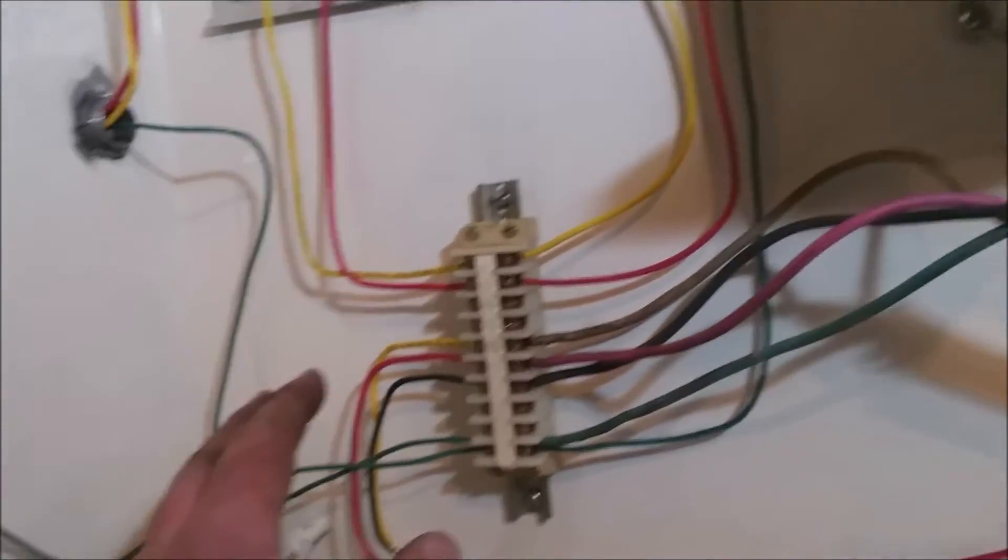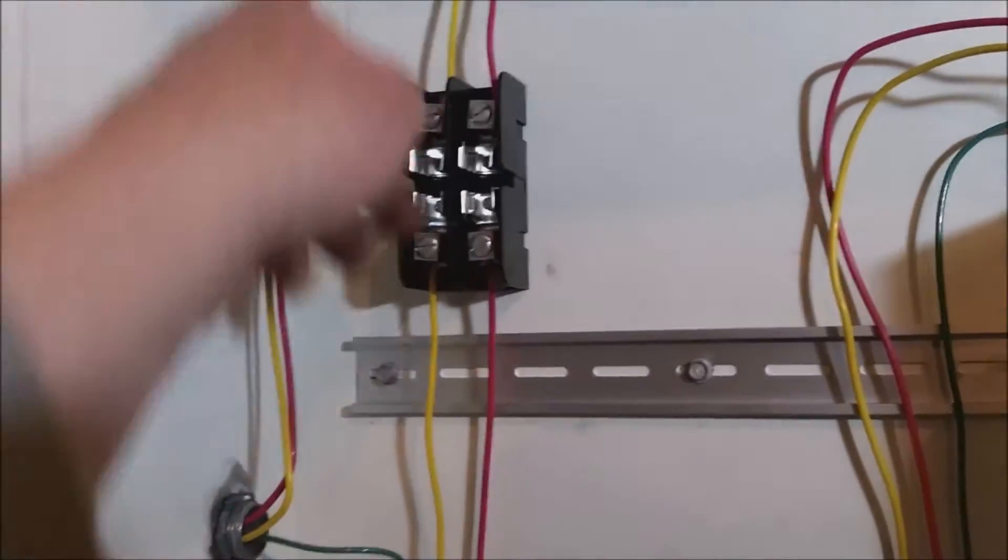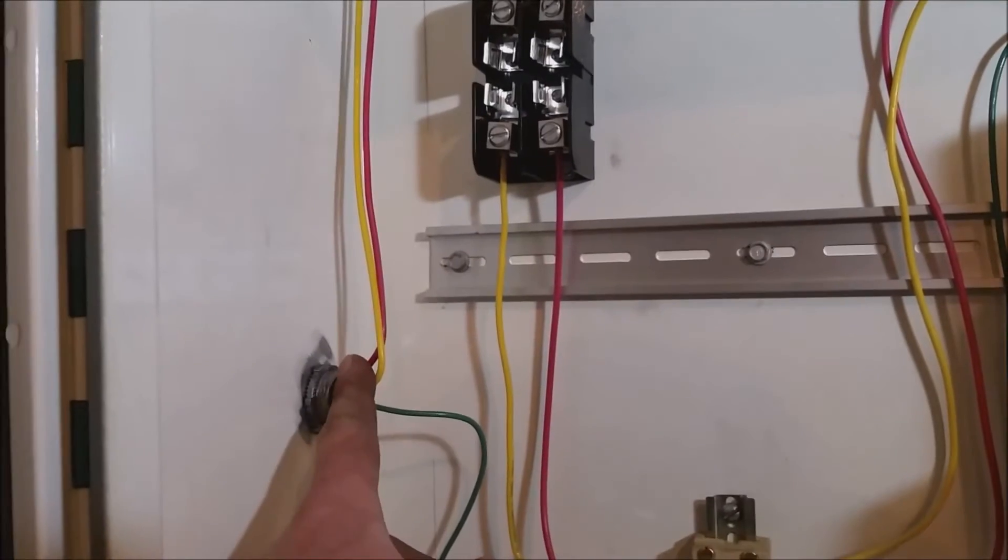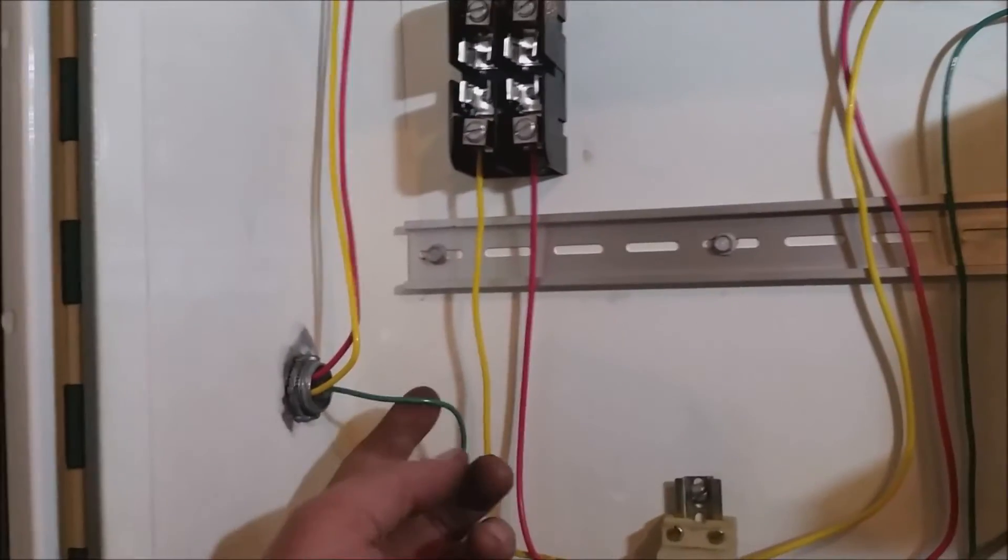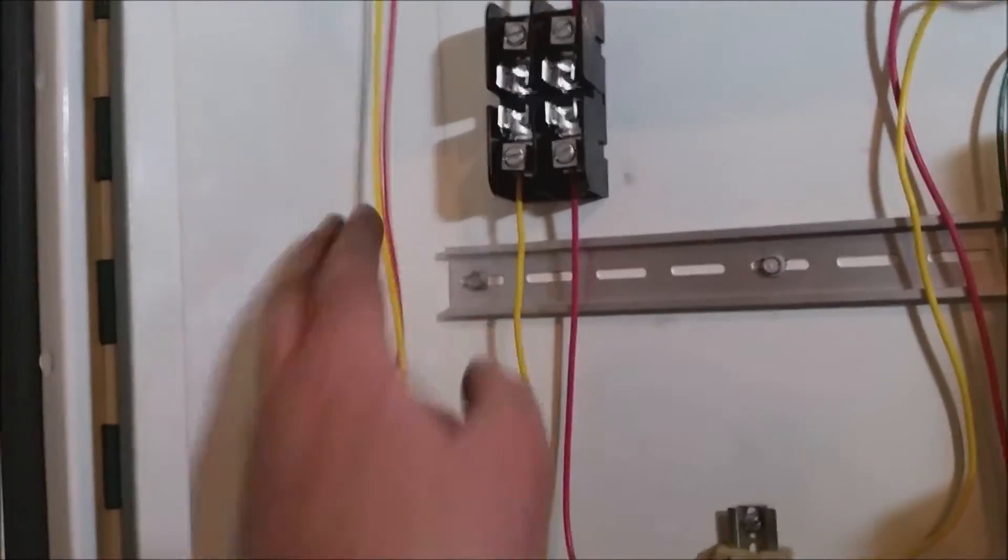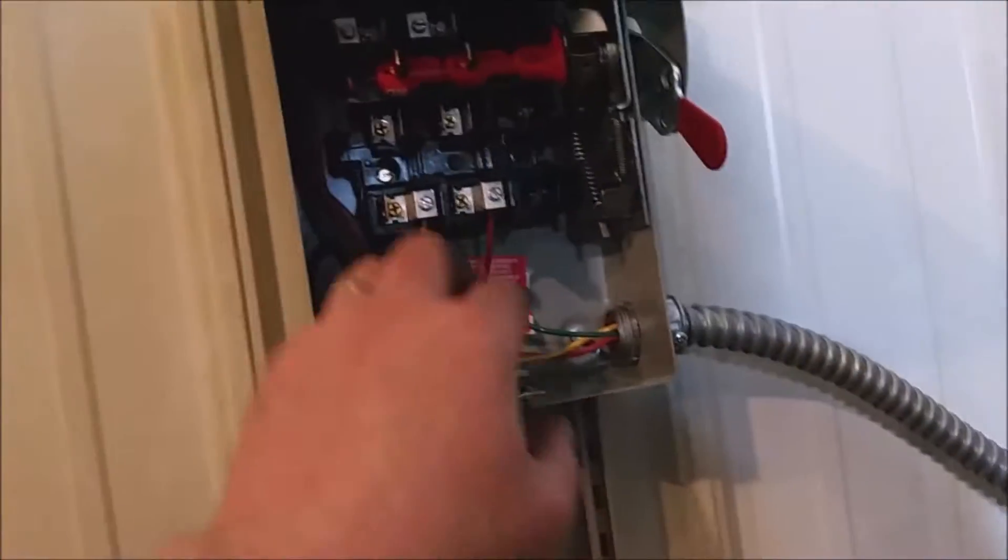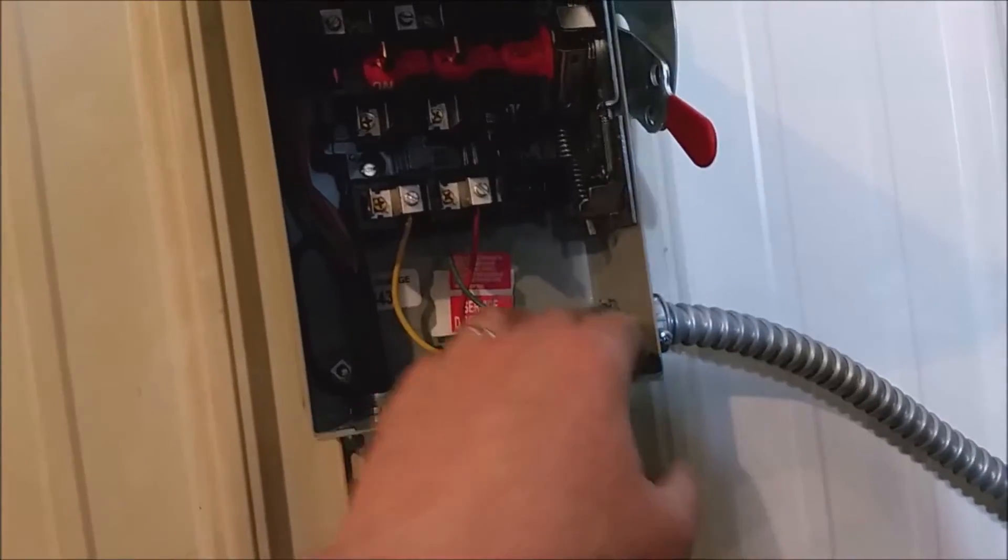I've got my wire coming in here from my disconnect, my ground and my other two wires for the 230 volts coming in there. I made a little conduit there from my disconnect, and then I made a cord here.